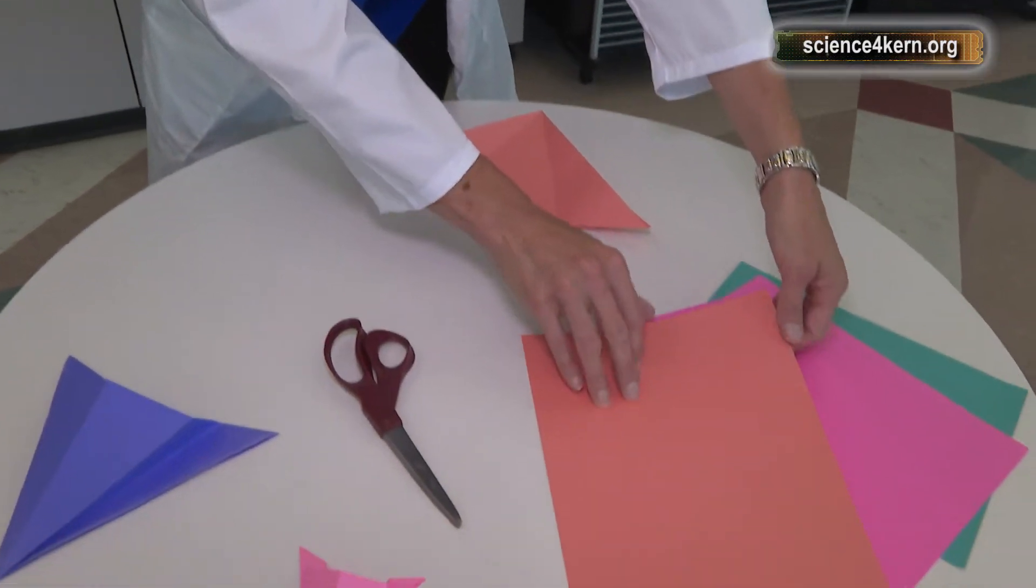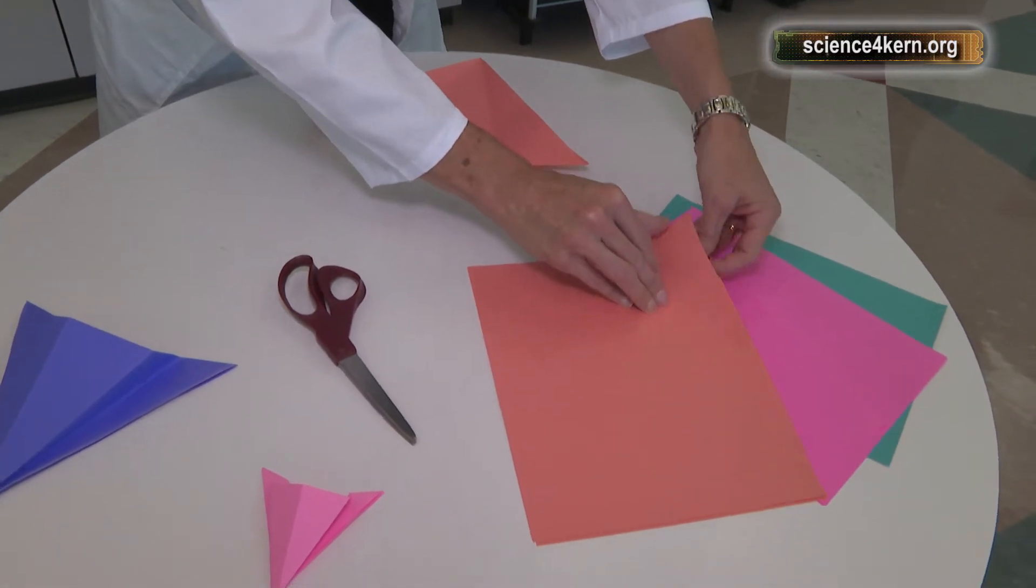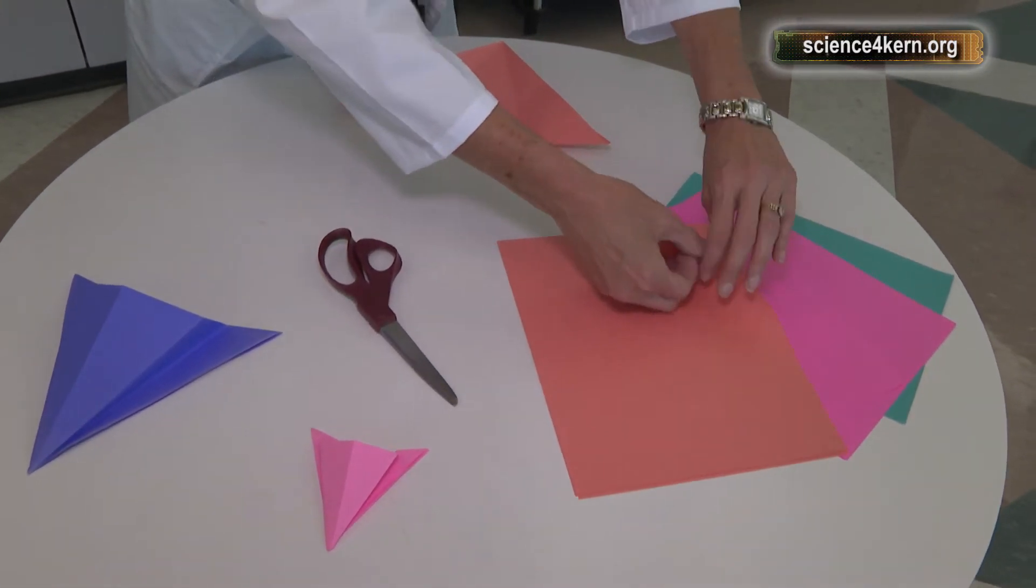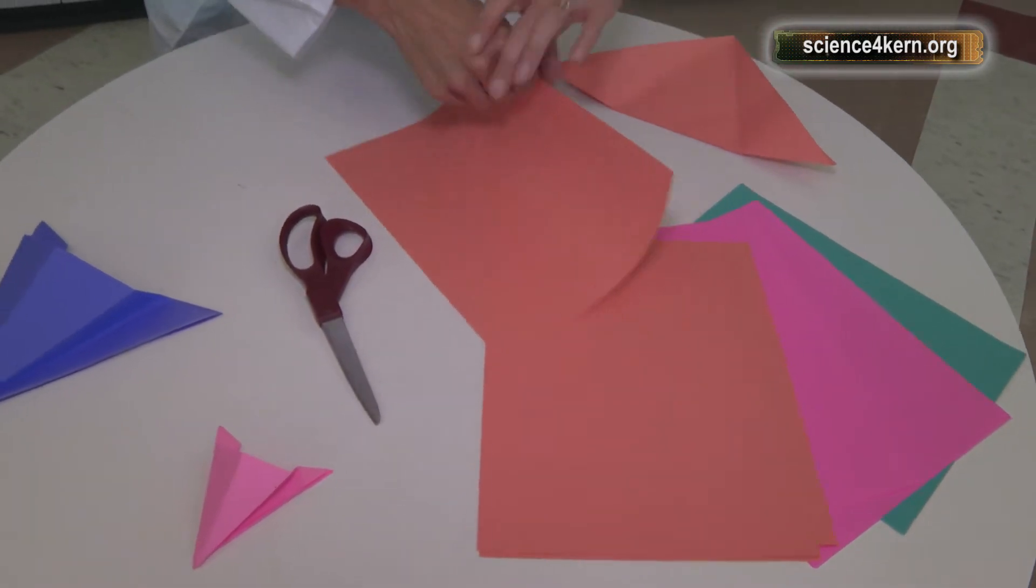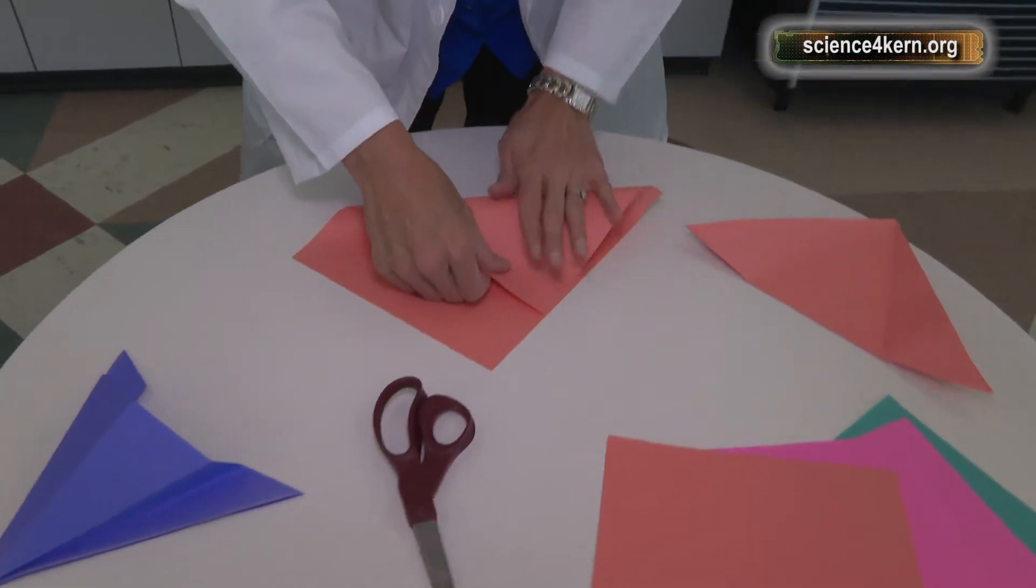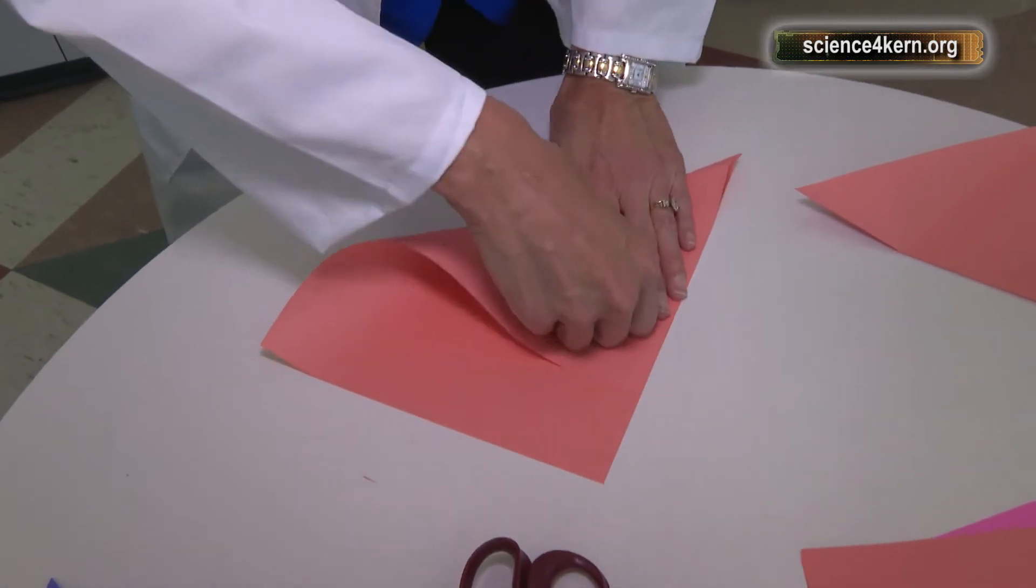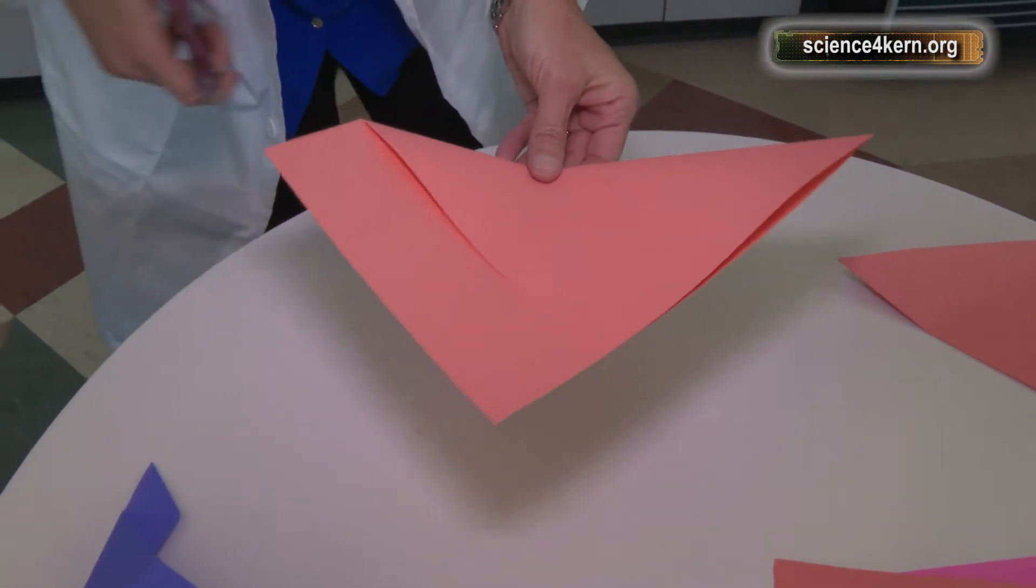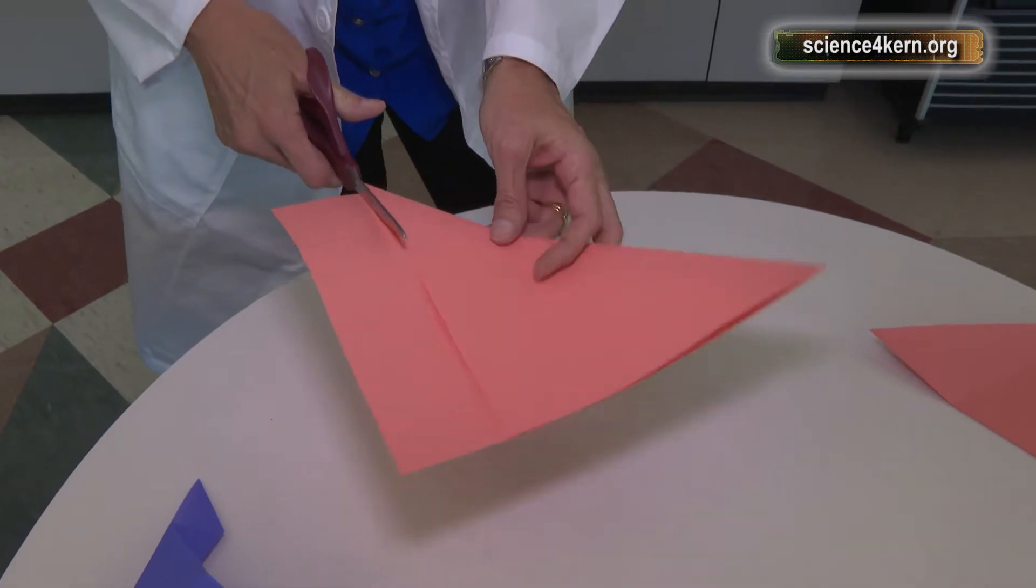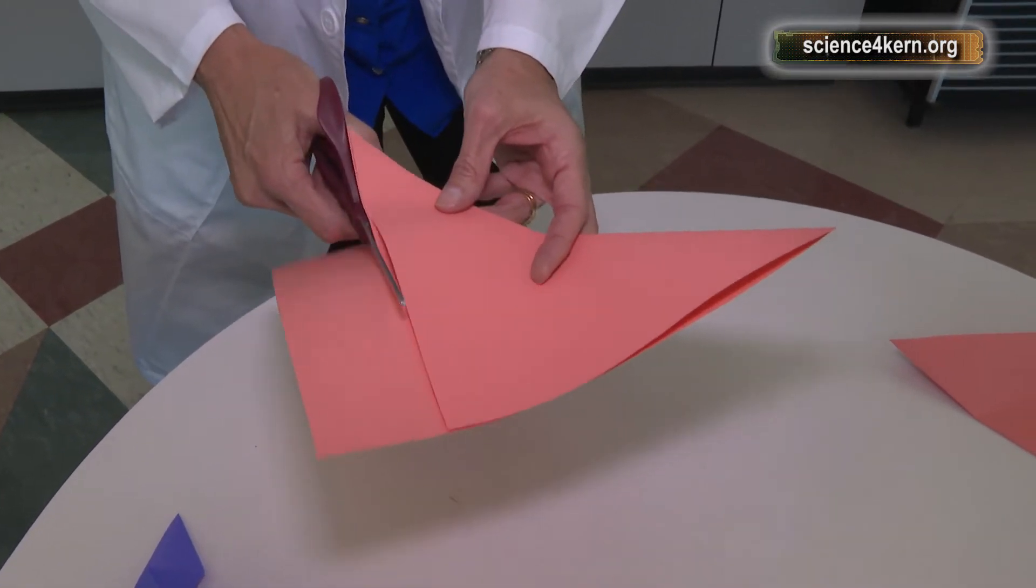And to take our computer paper and make sure that it's a square, I'll show you real quick how to do that. We fold the triangle right like that, fold across, and then cut off this rectangle.